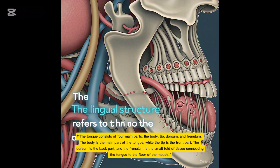The tongue consists of four main parts: the body, tip, dorsum, and frenulum. The body is the main part of the tongue, while the tip is the front part. The dorsum is the back part, and the frenulum is the small fold of tissue connecting the tongue to the floor of the mouth.